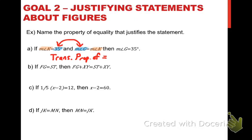How about the next one? If FG equals ST, then FG plus XY equals ST plus XY. I'm tricking you a little bit — this is not from this video, it's from the previous one, but it's still a fairly obvious one. You'll notice in the two equations that I have FG and ST on the left and right side respectively in each equation. What happened is that in the second equation, I added an equivalent value XY to both sides. And if at any time you add the same thing to both sides of the equation, you've got the addition property of equality at work.